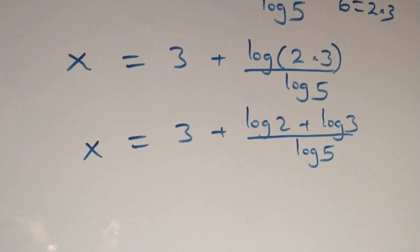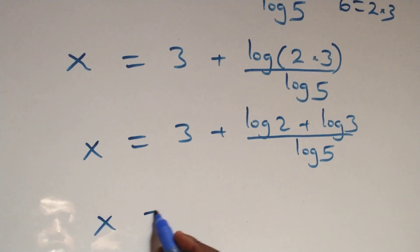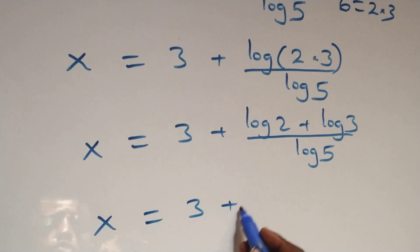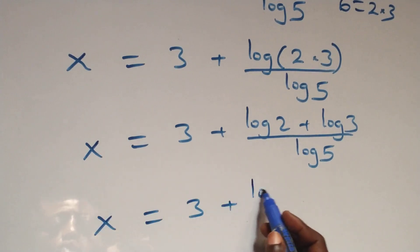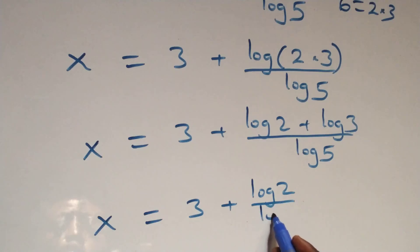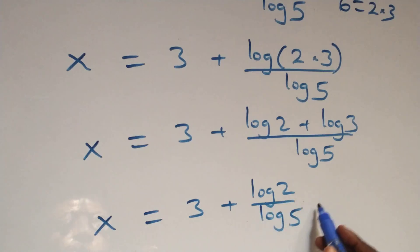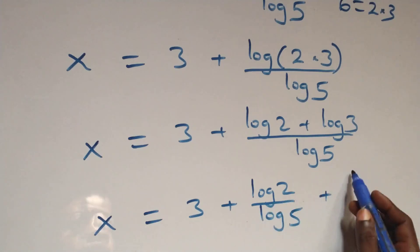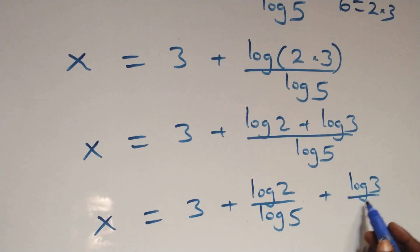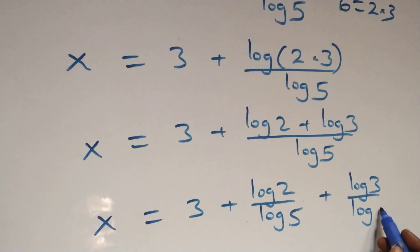We separate this into two fractions. And we have x equals to 3 plus log 2 over log 5 plus log 3 over log 5.